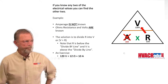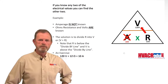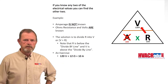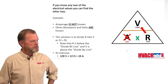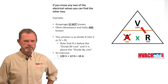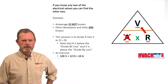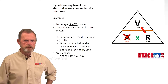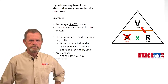Here's another one. If you don't know amps but you know volts and ohms resistance, same deal. You've got 120 volts and 12 ohms resistance. You divide 12 into 120 volts and it's going to give you 10 amps.